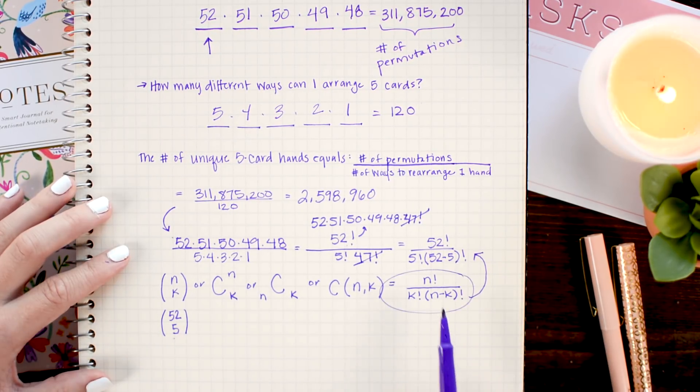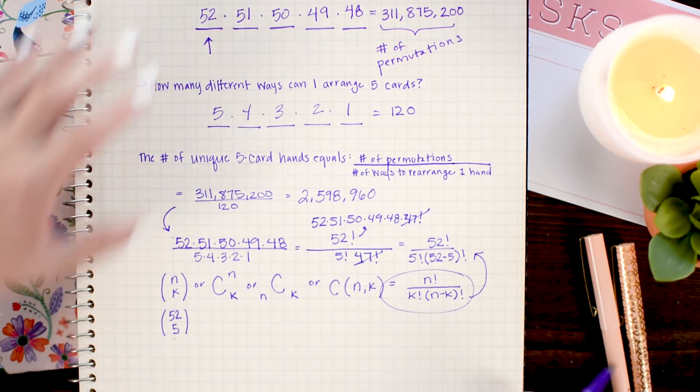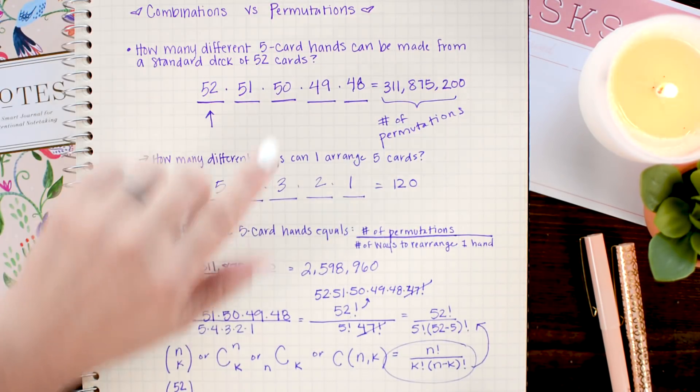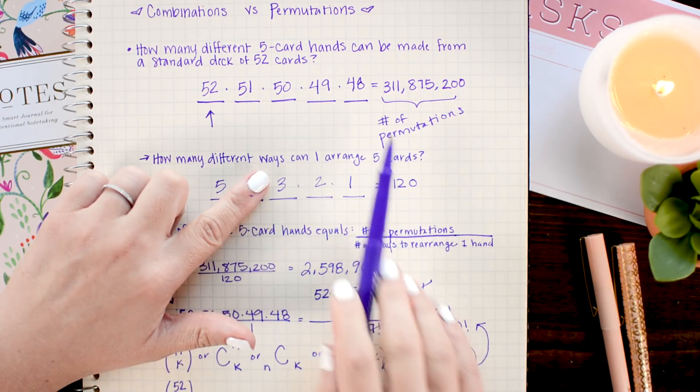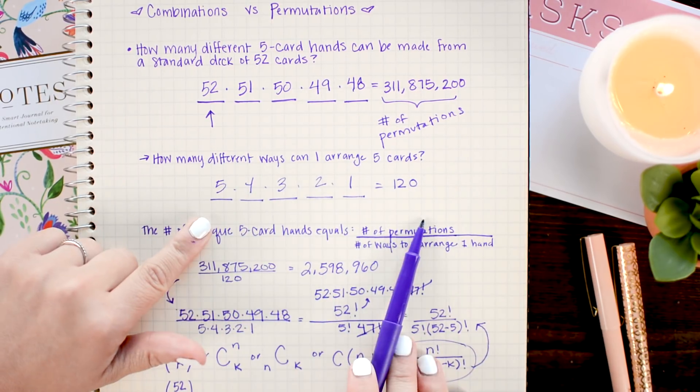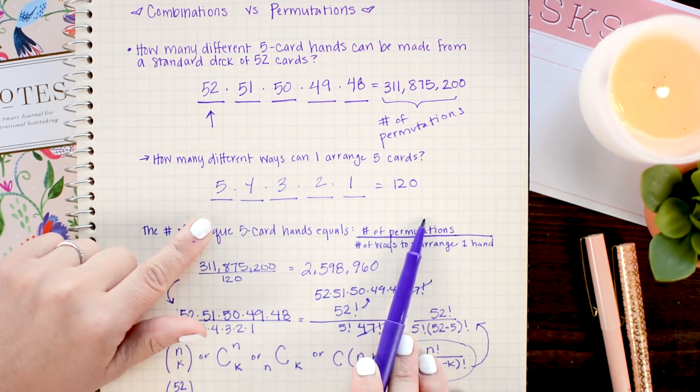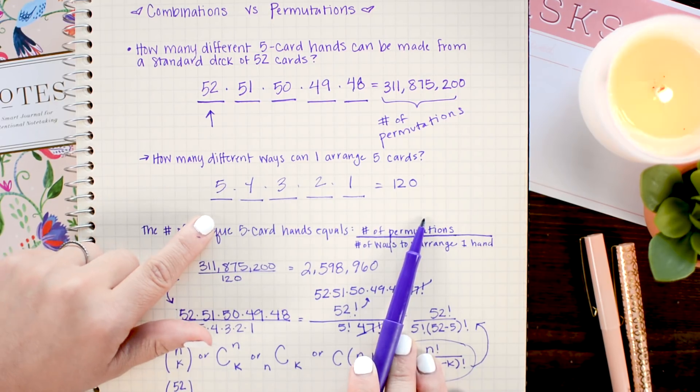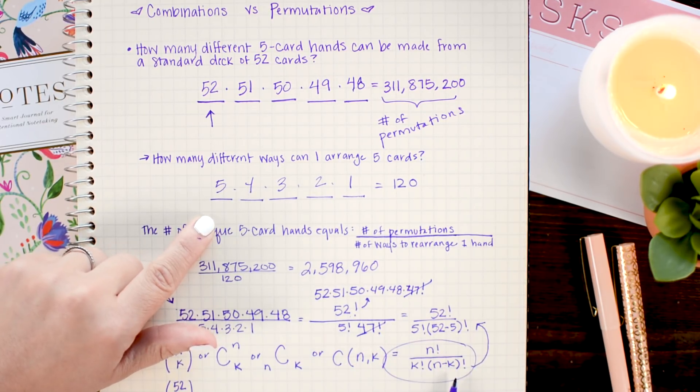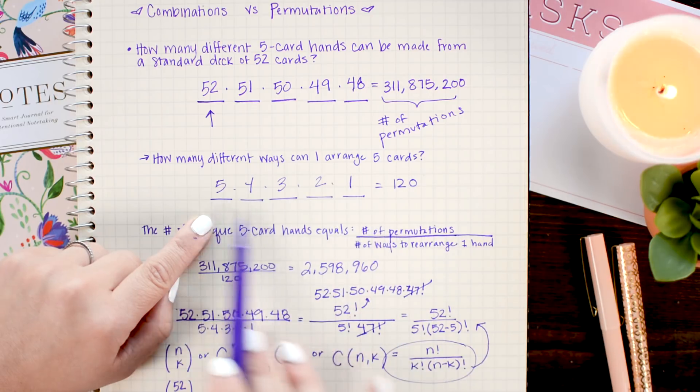Recall that the only difference between the combinations and the permutations that we had up here was that we divided out all the repeat pairs. So, that means our permutations formula is just like the combinations formula, but without this number divided out. So, what does that look like?